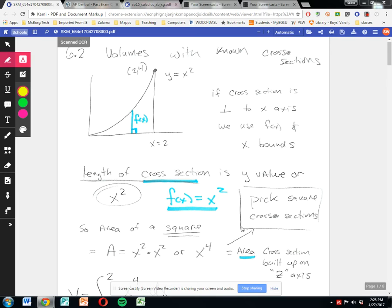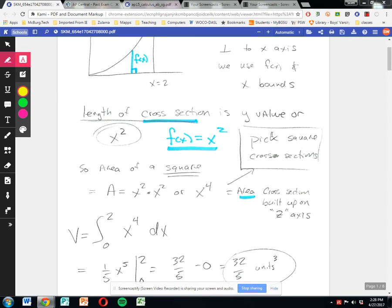So we'll do this pretty straightforward one first. So if the function itself is x-squared, all right, so this length here, this fx, is simply x-squared. It's the length of the cross-section. If what they're going to do with this cross-section is build squares up off of it, so what they said is pick square cross-sections.